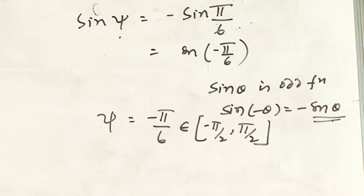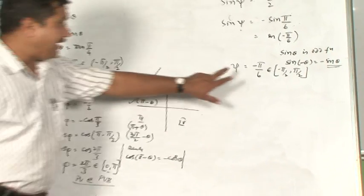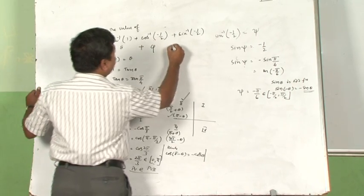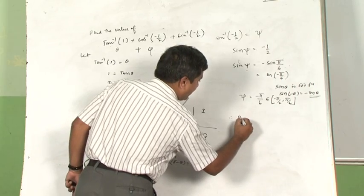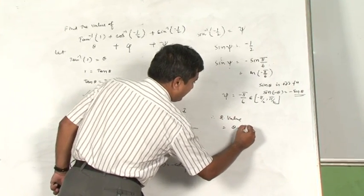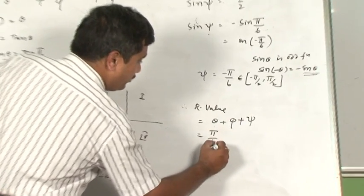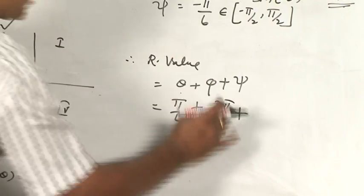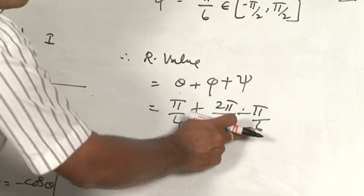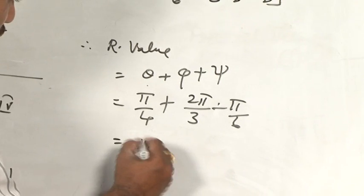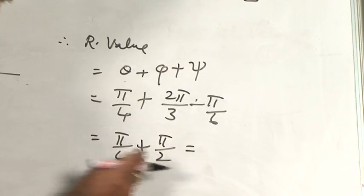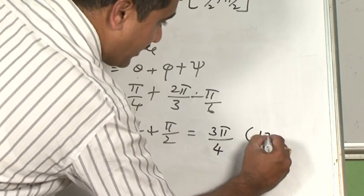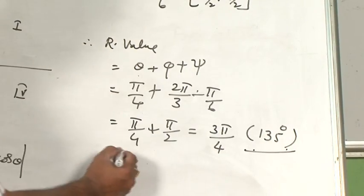Now we have all three values: θ = π/4, φ = 2π/3, ξ = -π/6. Adding them: θ + φ + ξ = π/4 + 2π/3 + (-π/6). Now 2π/3 - π/6 = 120° - 30° = 90° = π/2. So the total is π/4 + π/2 = 45° + 90° = 135° = 3π/4. This is the required value.